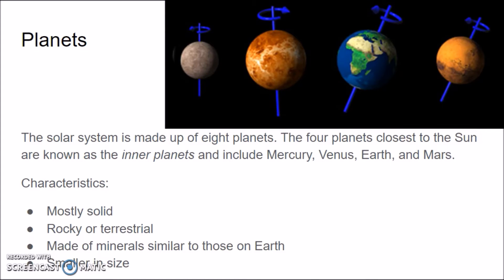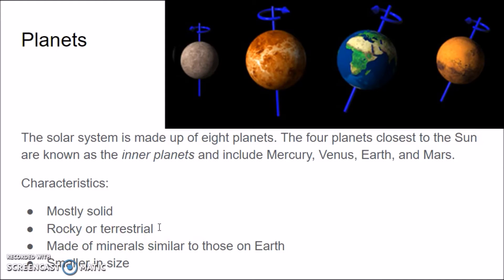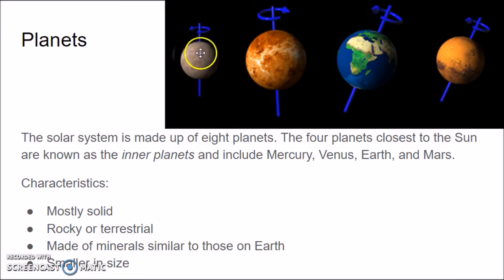Our solar system is made up of eight planets — yes, eight, not nine. We'll talk about Pluto in a bit. The four planets closest to the Sun are the inner planets: Mercury, Venus, Earth, and Mars. They're mostly solid and made up of rock — rocky or terrestrial. Terrestrial means made of rocks. These inner planets are made up of minerals similar to those on Earth and are smaller in size compared to the outer planets. Of the inner planets, Earth is the largest, Venus is closest in size to Earth, Mars is about a third the size of Earth, and Mercury is even smaller.